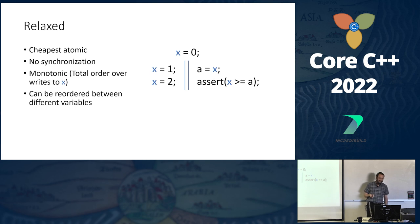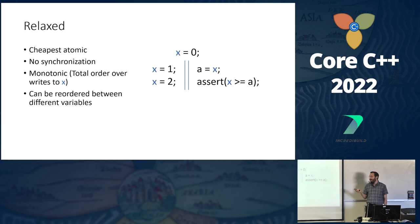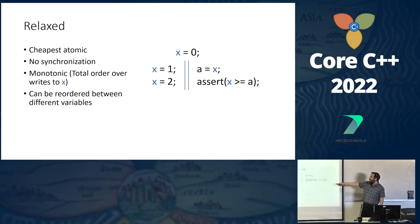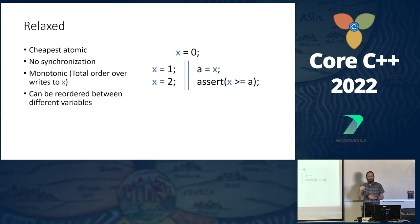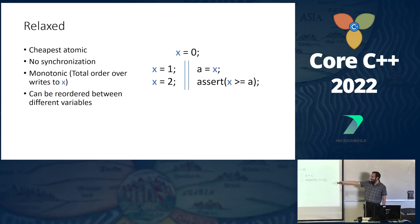The cheapest kind is relaxed — it gives no synchronization whatsoever, but does provide one guarantee: writes are monotonic. We have a total order of writes for a specific location. If x starts at 0 and one thread writes 1 then 2, and another thread reads x twice, those reads must be monotonic — we can't read from an earlier write we've already passed. If I already read x=2, I can no longer read 1, because it was overwritten and I know that.